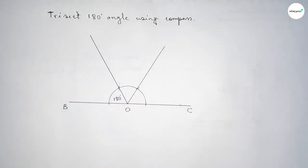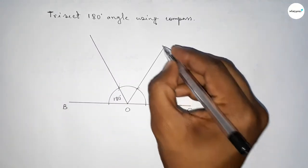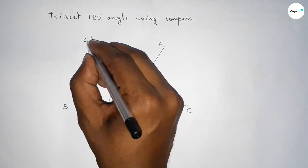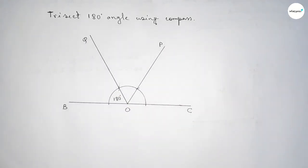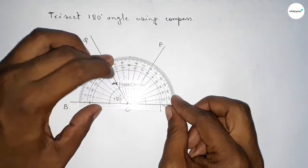trisect the 180-degree angle. So take point P here and point Q here. Now checking the angles,